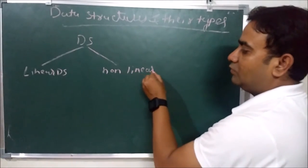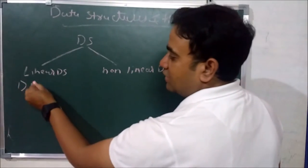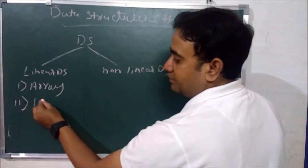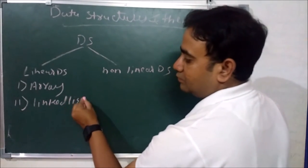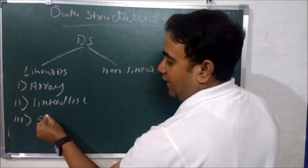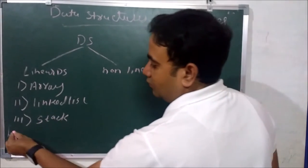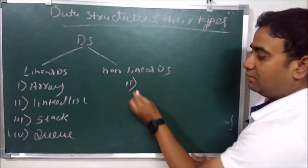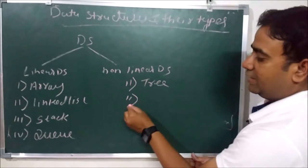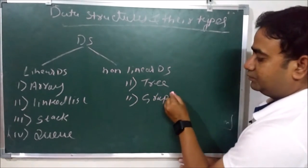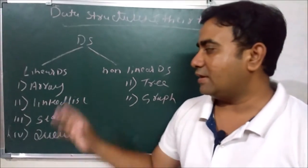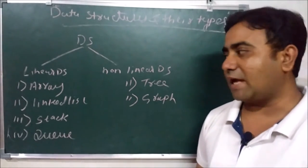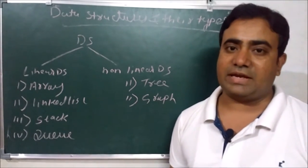Data structures are divided into two parts: linear data structures and non-linear data structures. In linear data structures, the types are: first, array; second, linked list; third, stack; fourth, queue. In non-linear data structures: first, tree; second, graph. In this video I will shortly explain all types of data structures, starting with array.